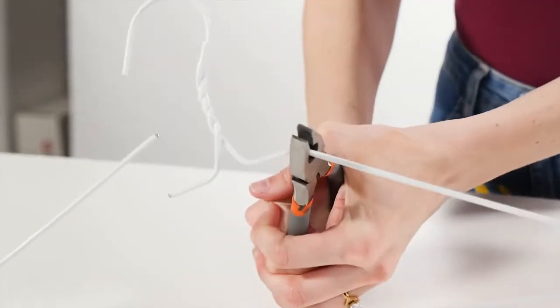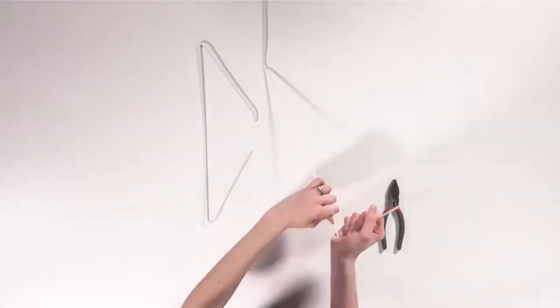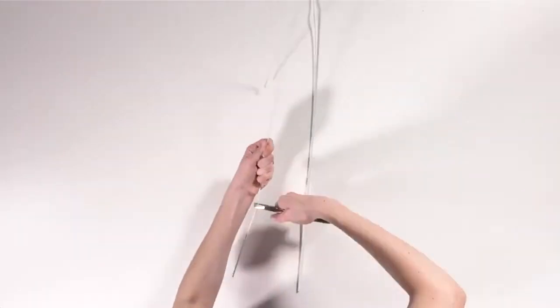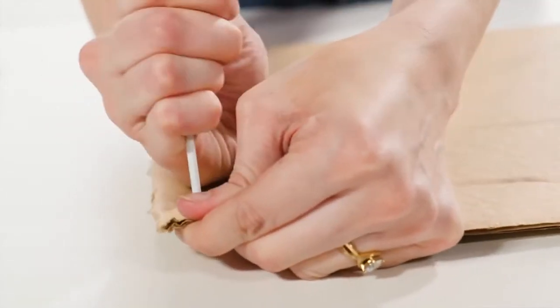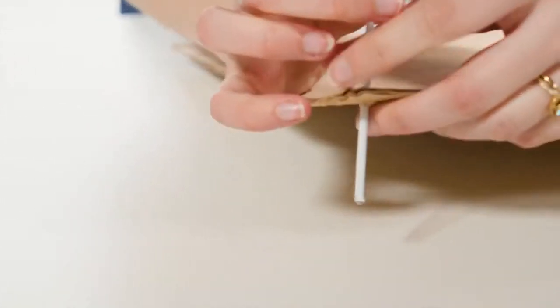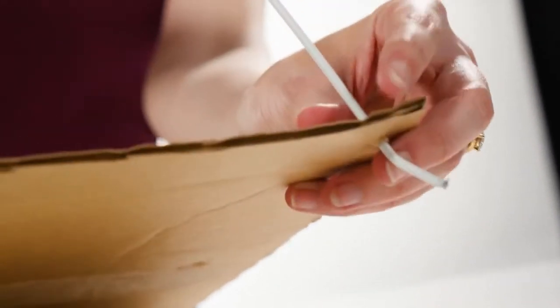First, you're going to use your pliers to cut off the hooks on the end of your hangers and straighten them out. Next, take one of the wires and use it to punch a hole in the corner of your cardboard. The wire should poke through about one inch from the cardboard.